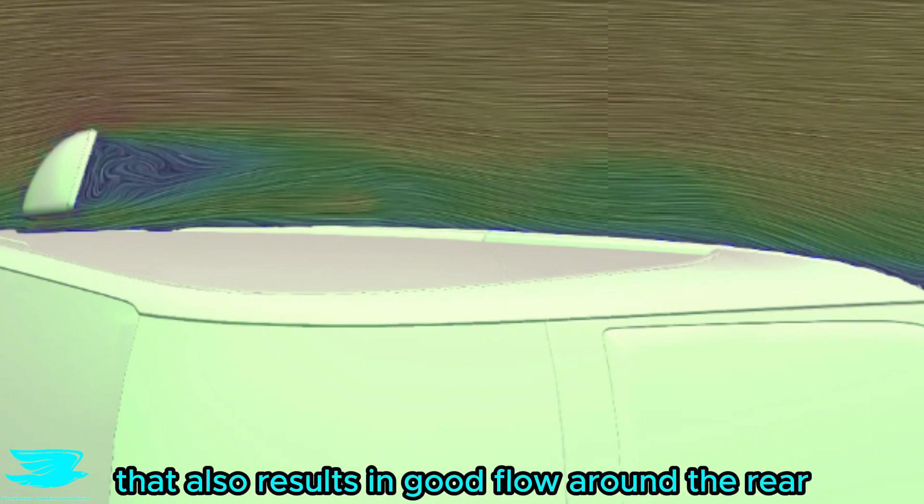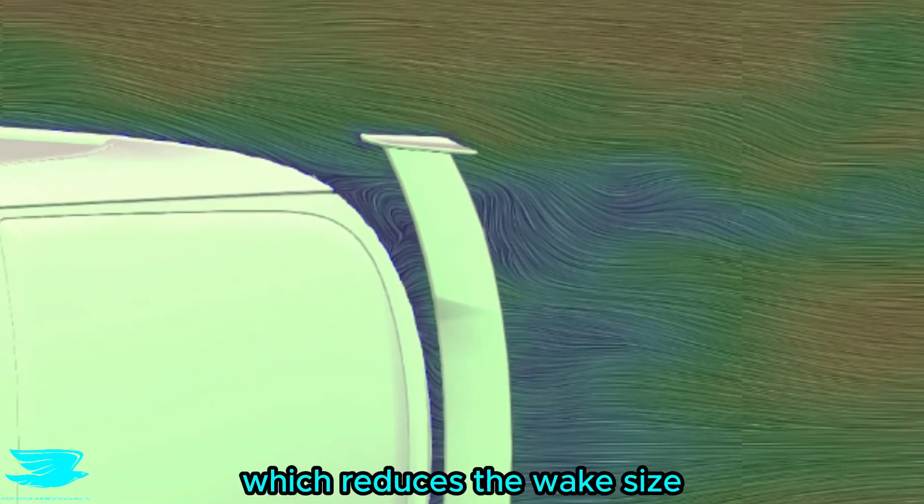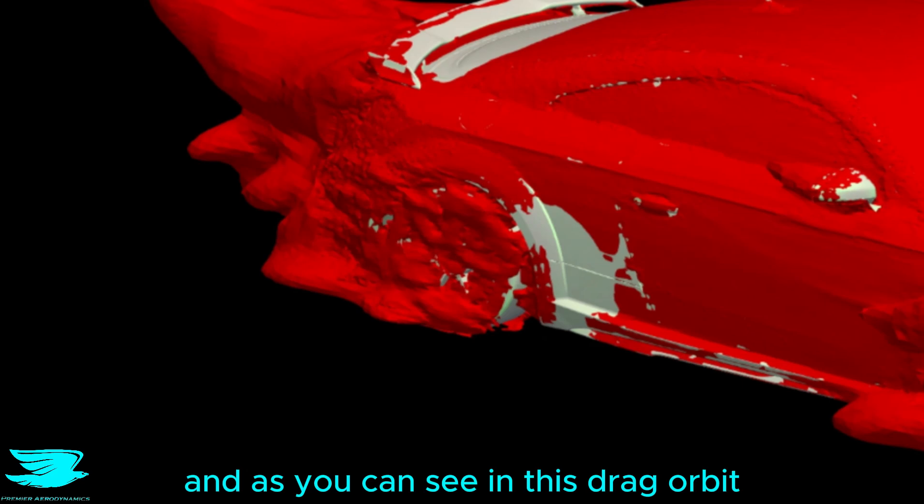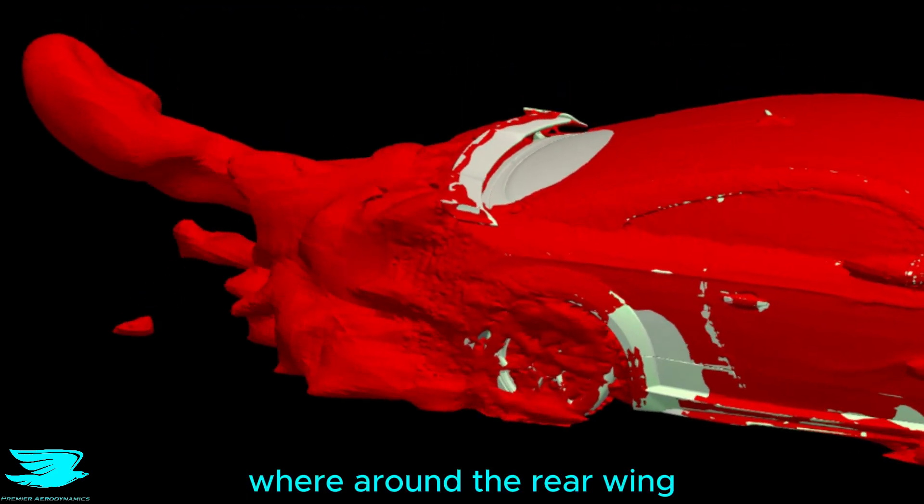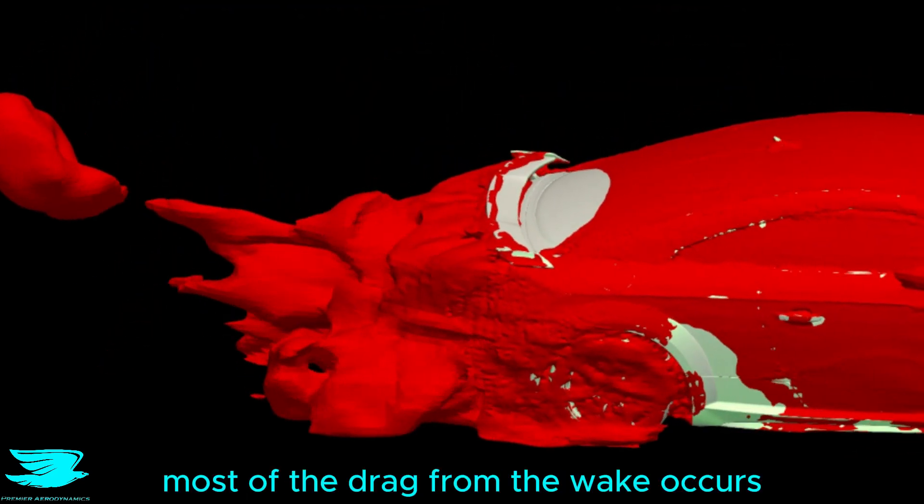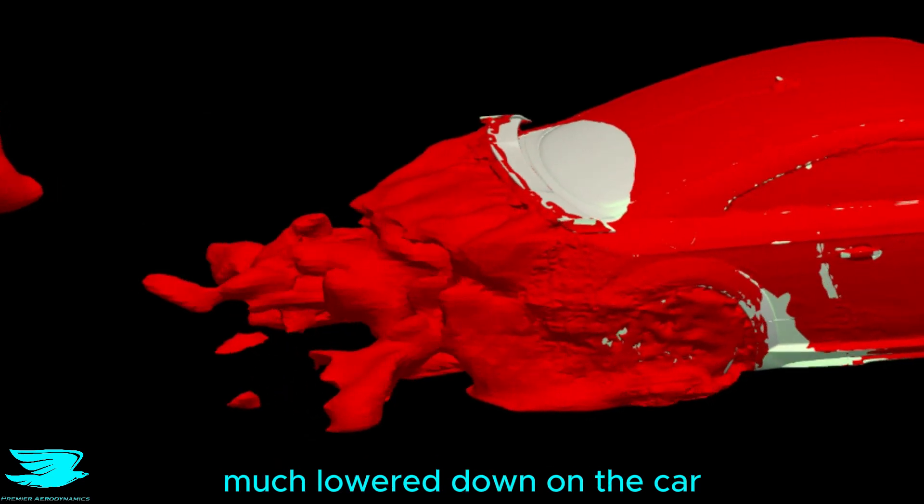Around the sides of the car, the flow is very well behaved. That also results in good flow around the rear, which reduces the wake size, and as we can see in this drag orbit, where around the rear wing, there is almost no drag. Most of the drag from the wake occurs much lower down on the car.